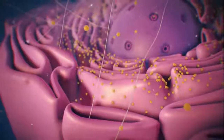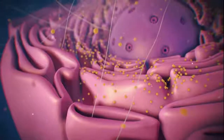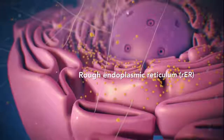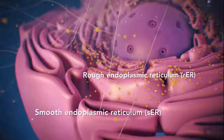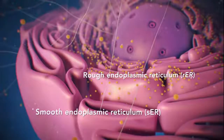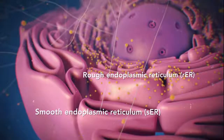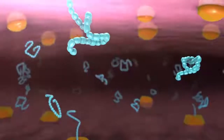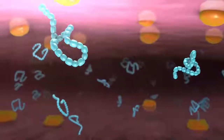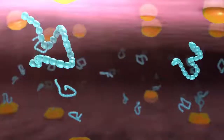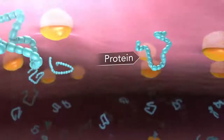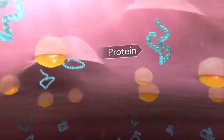There are two types of ER. Rough ER has ribosomes attached to it, and smooth ER doesn't have ribosomes attached to it. The endoplasmic reticulum is a membrane-enclosed passageway for transporting materials, such as the proteins synthesized by ribosomes.